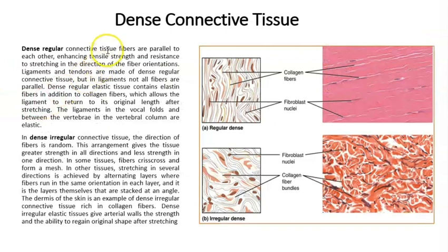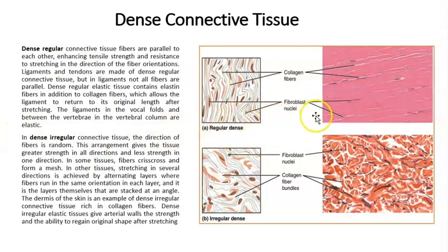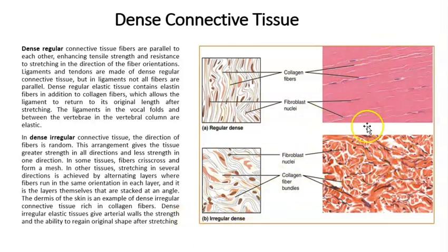Scrolling down, we're going to see the other type, which is dense connective tissue. Dense connective tissue has two main kinds: dense regular and dense irregular. The characteristic is that dense regular is going to have some pattern with respect to the fibers, either from left to right or right to left. In the case of dense irregular, it has no pattern whatsoever, but a lot of fibers. That's why it's called dense connective tissue.